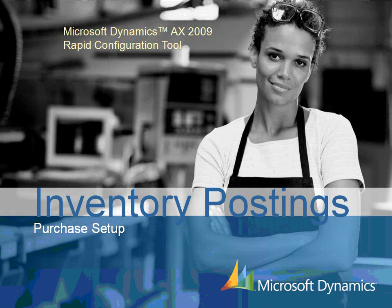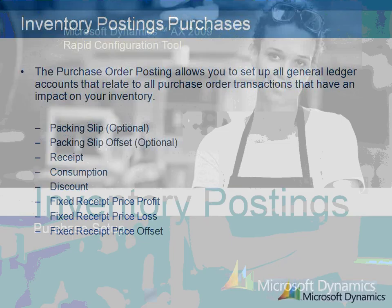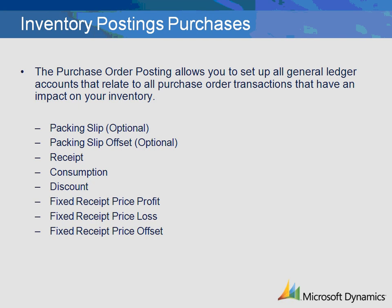This demonstration will review the setup of the Purchase Order tab of the Inventory Postings table in Microsoft Dynamics AX 2009. The Purchase Order tab of the Inventory Posting table allows you to set up all general ledger accounts that relate to all purchase order transactions that have an impact on your inventory. Within the Purchase Order tab, there are various types of transactions that must be set up if the functionality is going to be used.